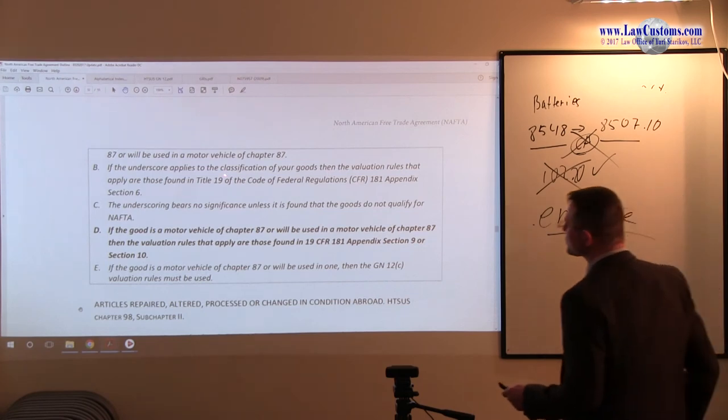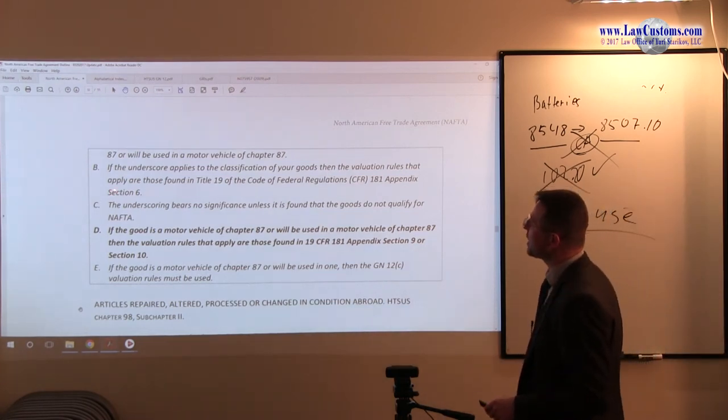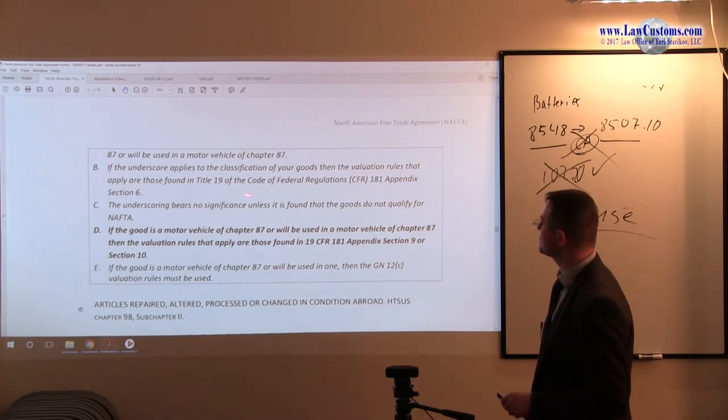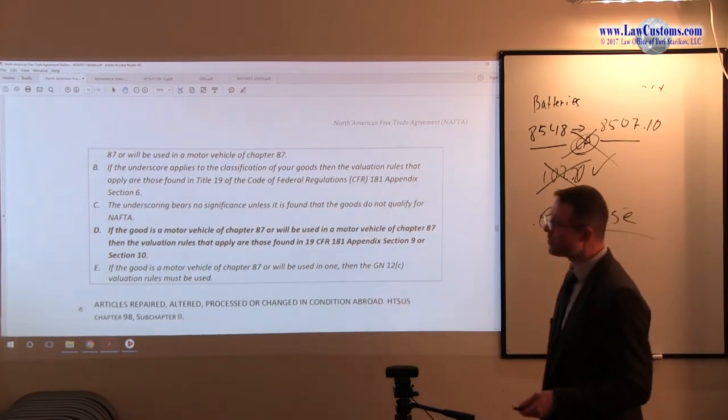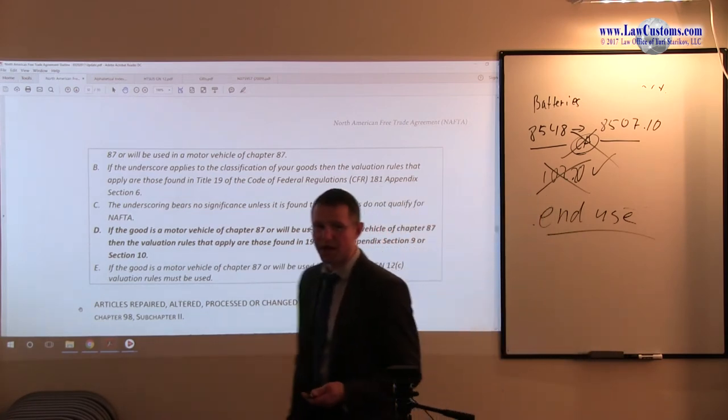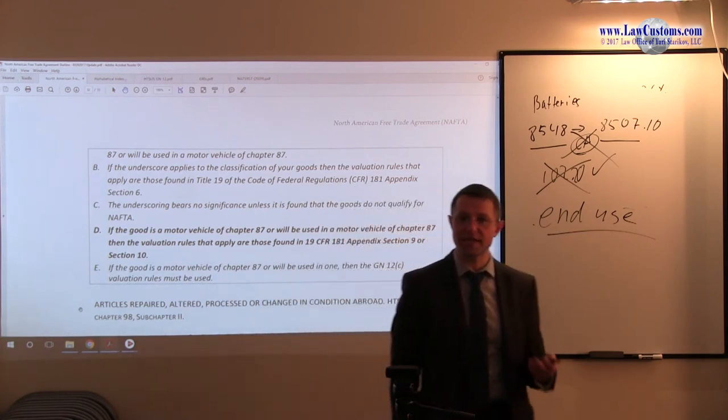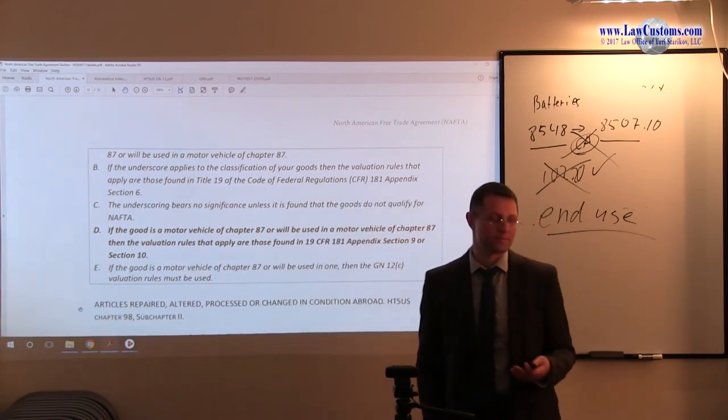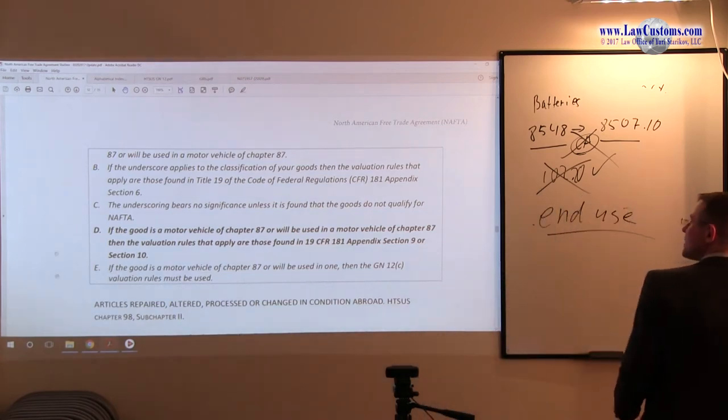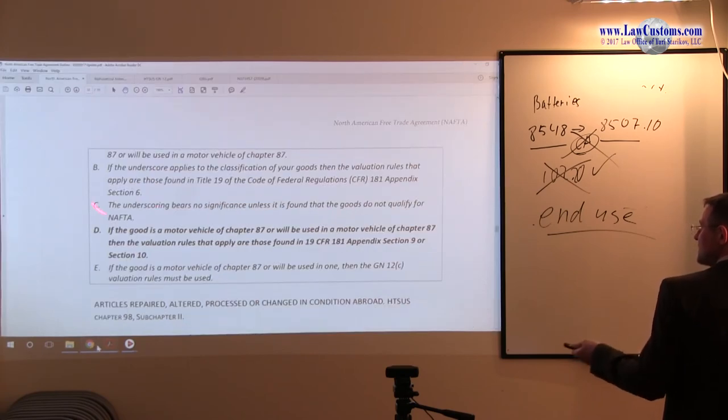The underscoring applies to classification of goods when valuation rules that apply for those found in Title 19 of CFR, appendix section 6. Well, again, recall the applicable appendix is section 8 and section 9. Because when we are dealing with automotive goods, we should keep with part 1, starting with section 8. So section 6 is not it.